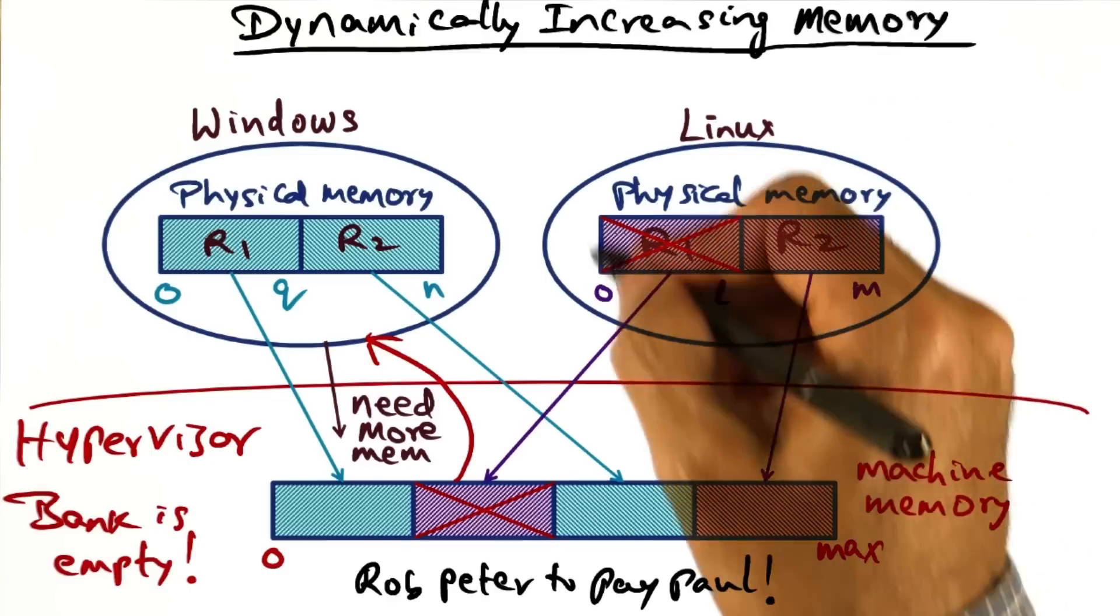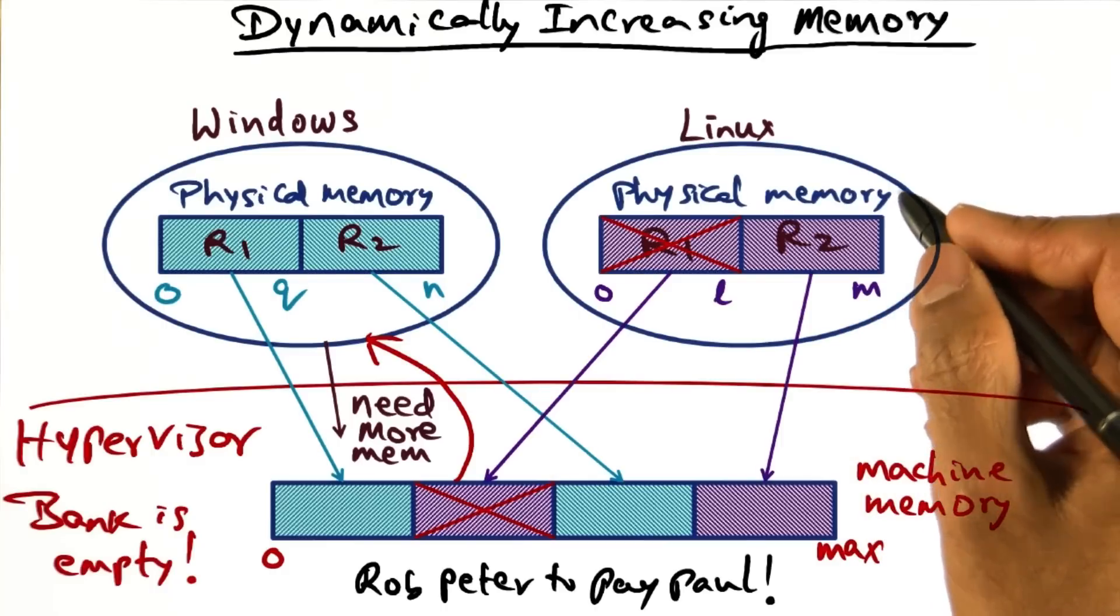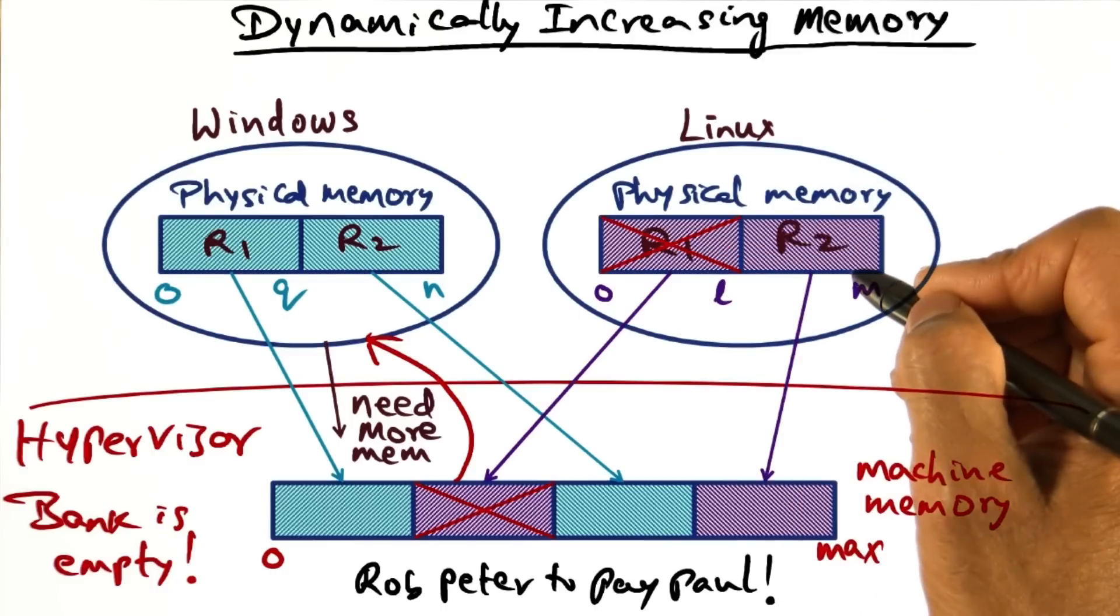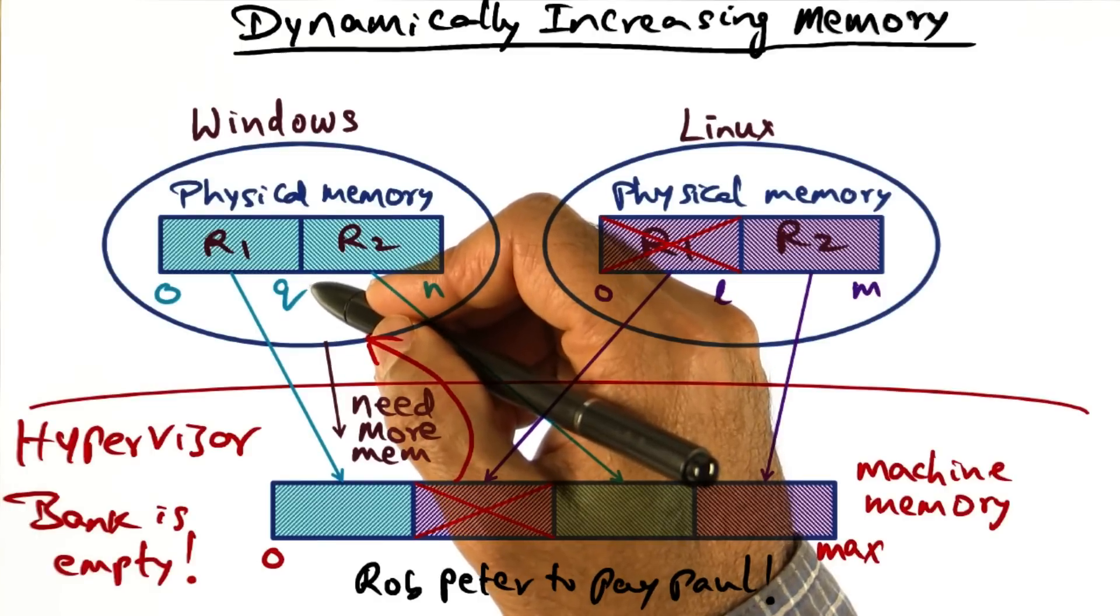would be to coax one of the guest operating systems, in this case perhaps Linux, to give up some of its physical memory voluntarily to satisfy the needs of a peer that is currently experiencing memory pressure.